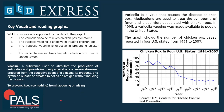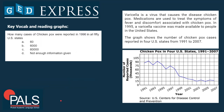Let's have a look at the next question, which focuses even more on the graph. How many cases of chicken pox were reported in 1996 in all 50 US states? The options are: A — 60, B — 66,000, C — 60,000, or D — not enough information is given. To answer this correctly we have to be very careful. Your first intuition might be to check 1996 on the graph and read off the value — about 60. So you might think the answer is A.